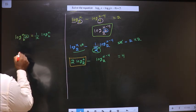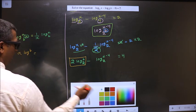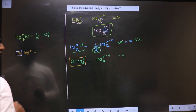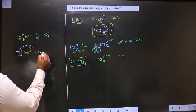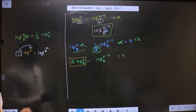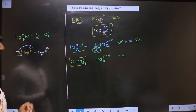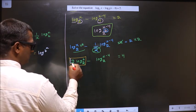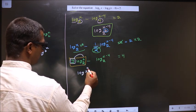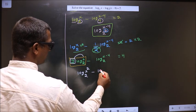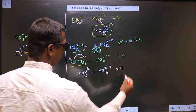Now I apply the formula: a log b — a number before the log goes up as the power, making it log b-power-a. Here the number is 2, so it goes as the power, giving log x-squared base 2 minus log(x minus 4) base 2 equal to 4.